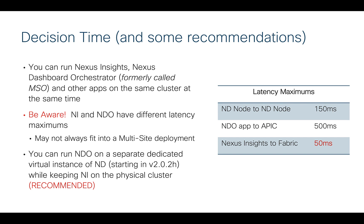Looking at the latency matrix: ND node to ND node for cluster formation is 150 milliseconds — not bad, that's pretty far geographically. The Nexus Dashboard Orchestrator application to the APIC sites it manages is up to 500 milliseconds — really far, which makes sense because multi-site is meant for geographically dispersed sites, possibly in different countries. But the maximum latency for the Nexus Insights application to the fabric it's receiving telemetry from is 50 milliseconds — five zero.